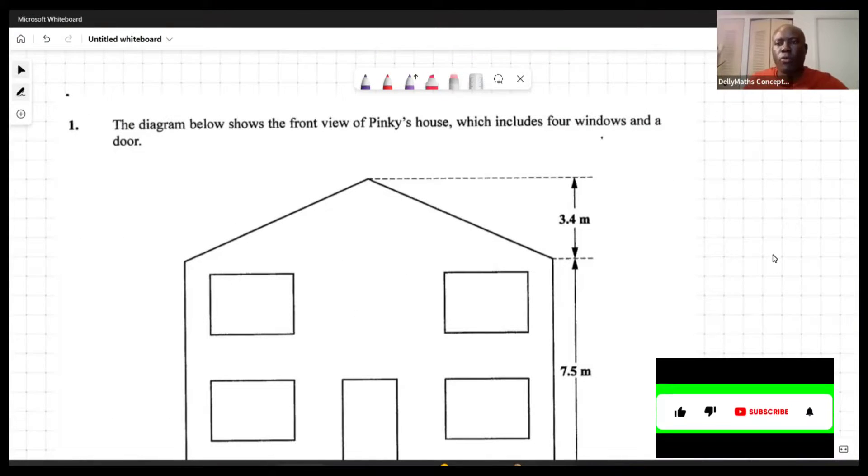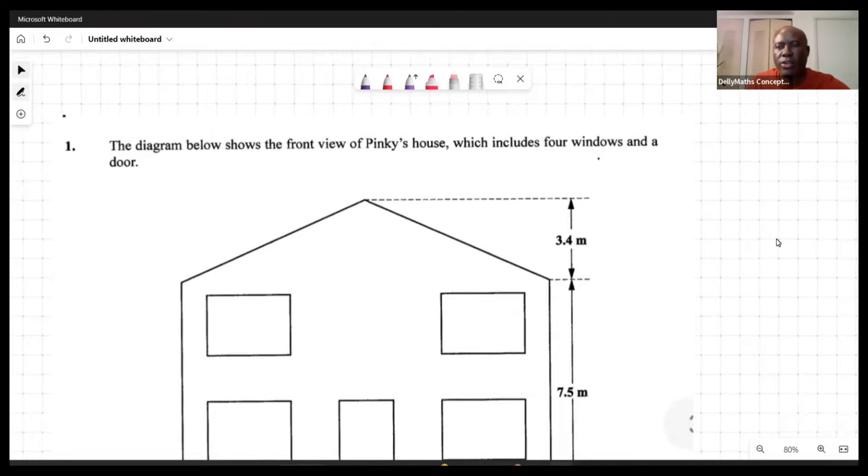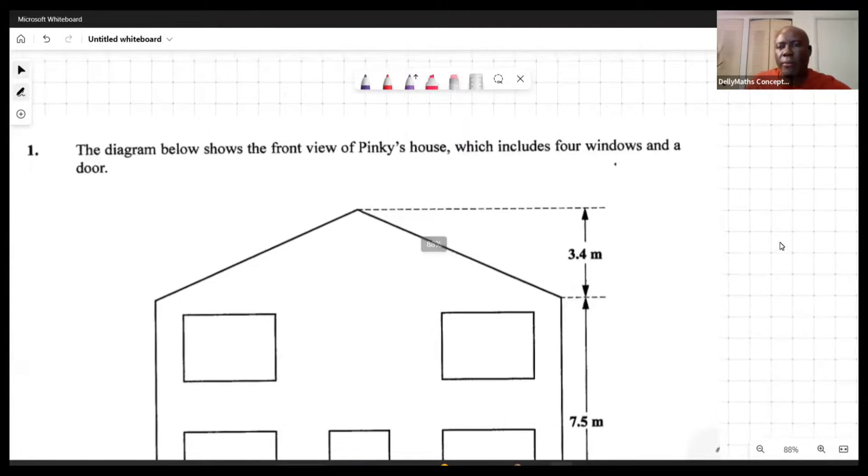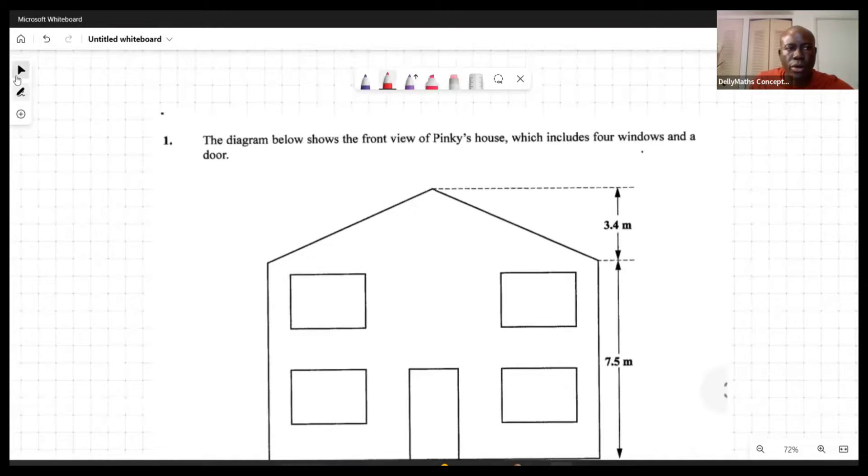Welcome back to Dynamo's Concept. What we're looking at now is a January 2023 CXC Math Paper 3. So we're actually looking at question 1 right now for Paper 3, which is the alternate to the SBA. So it reads as follows: the diagram below shows the front view of Pinky's house, which includes four windows and a door.